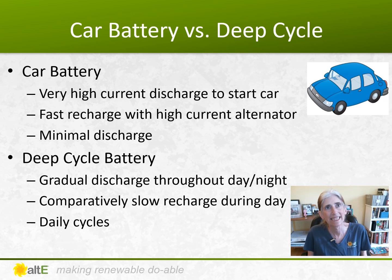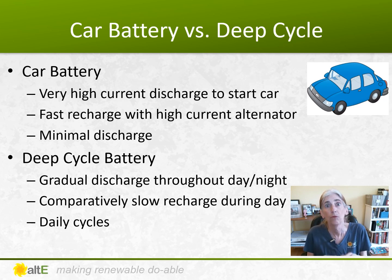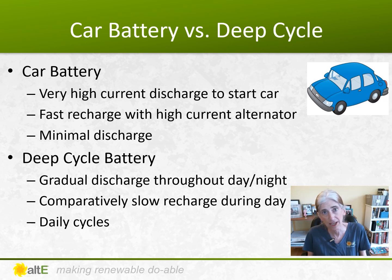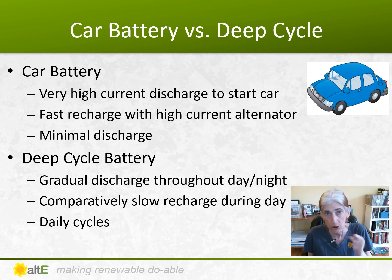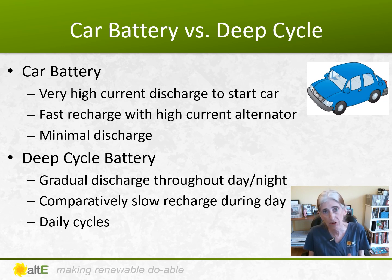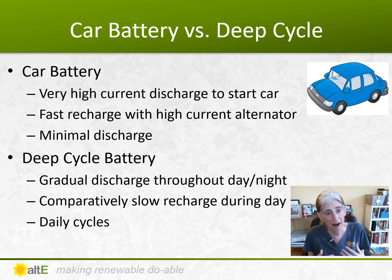A car battery is very different from a deep cycle battery. A car battery is designed to use a really heavy current to start your car, and then a heavy current from the alternator to recharge it as fast as you possibly can. So it's designed for quick bursts of energy, but not for extended use. It also does not want to be drawn down much. A deep cycle battery is specifically designed for smaller current loads, both charging and discharging, as well as using a lot more of the stored energy in the battery. It's comparatively a slow recharge throughout the day compared to a car battery.